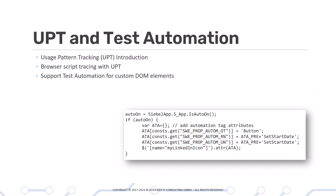UPT, also known as Usage Pattern Tracking, is a great vehicle for OpenUI developers to monitor usage patterns. This chapter also includes detail on how to enable your OpenUI custom DOM elements with Siebel test automation.